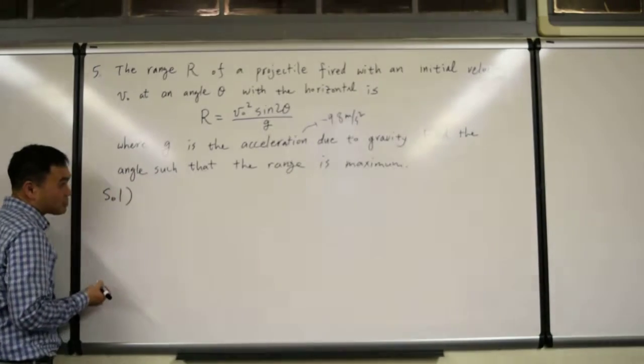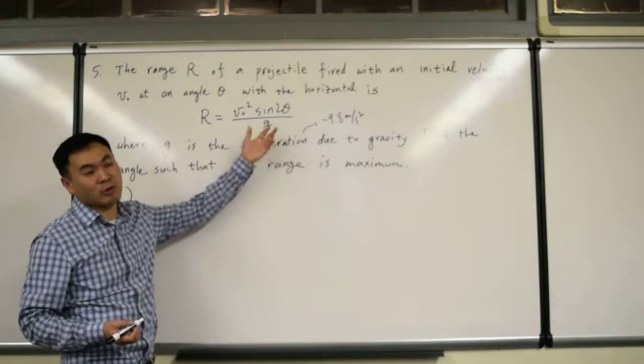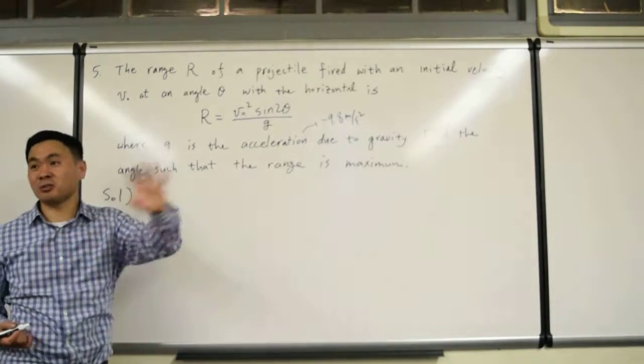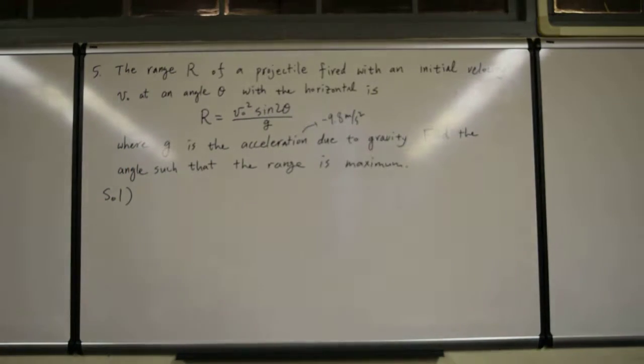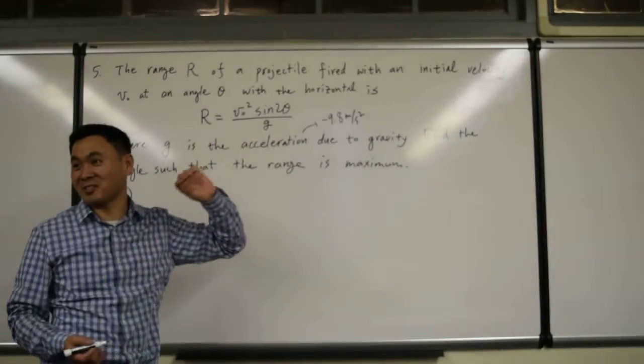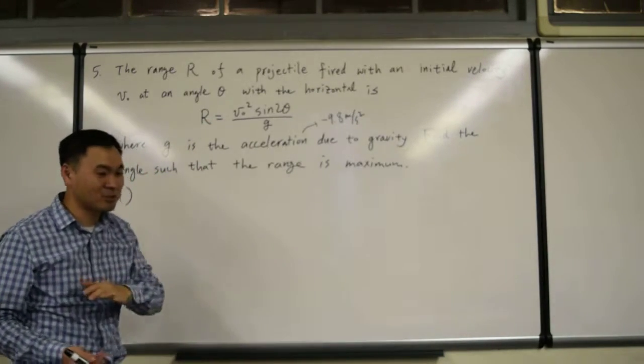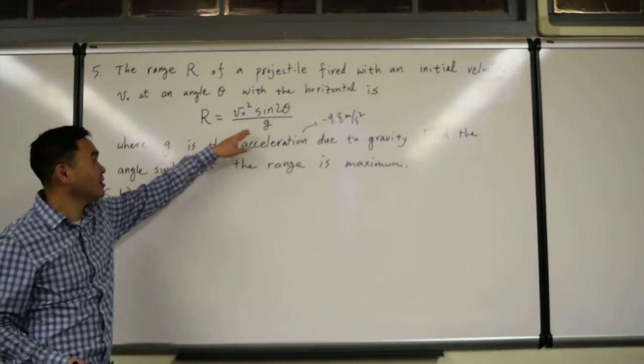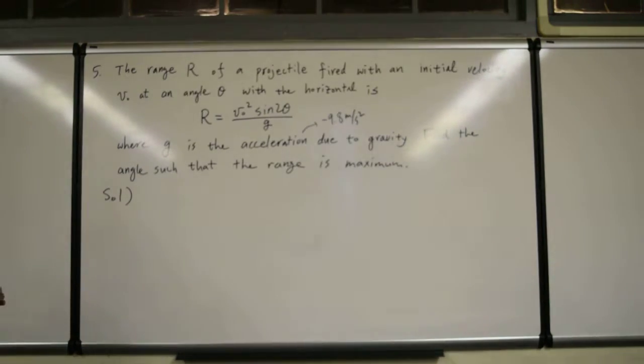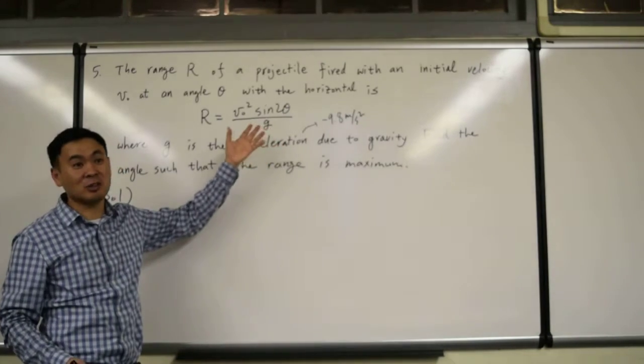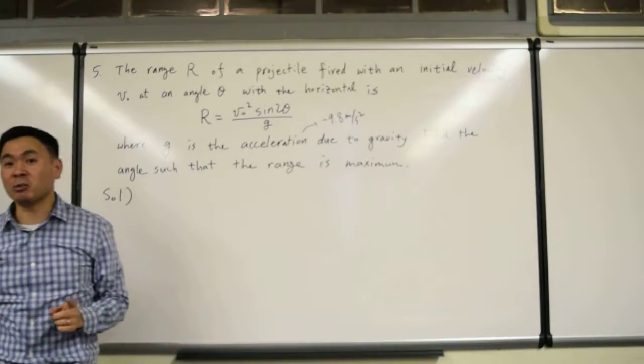Solution. In this case, we're going to consider v-naught as constant and g as constant. Well, g is a constant if you're not changing the location too much. I mean, if you're doing an intercontinental missile shooting, then this won't work anymore because it's very different. But in a shorter range where you just think the Earth is a plane, this is fine. And in that case, g is a constant and the velocity is the initial velocity, so that doesn't change. So although it seems like it has many variables in it, it only has one variable, which is just the theta.